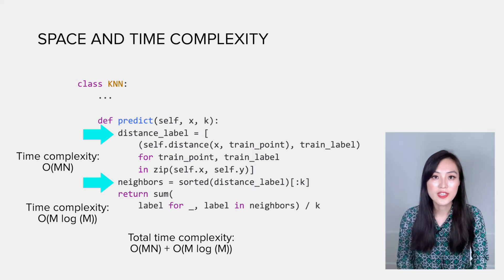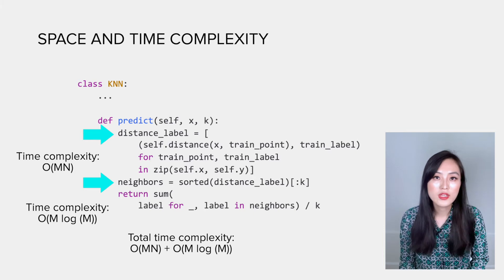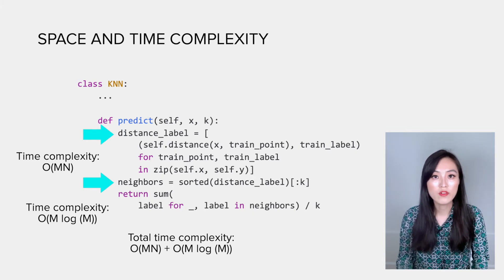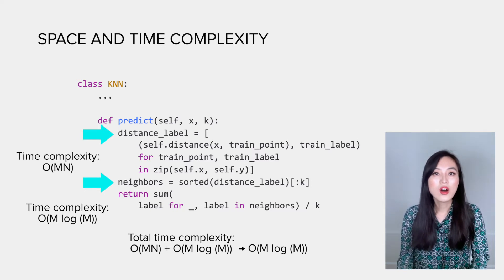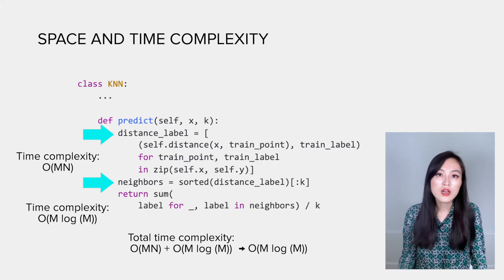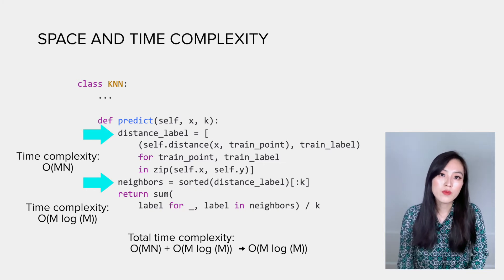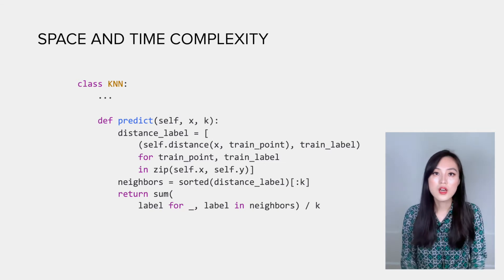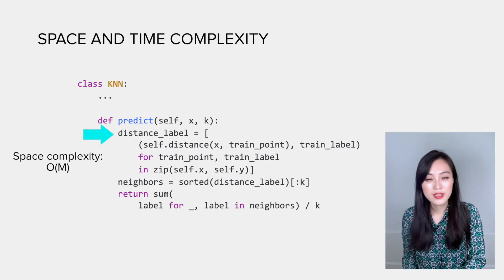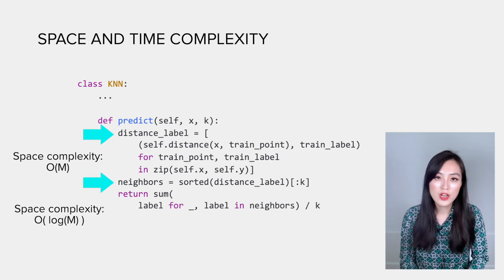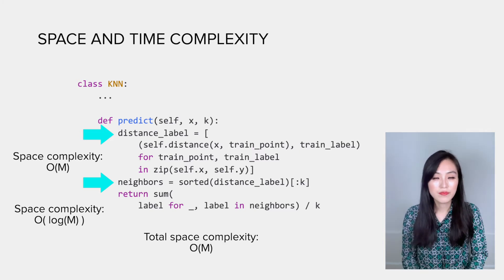Assuming log M is larger than N, because typically the number of training data points is much more than the number of features, so the overall complexity can be reduced to O(M log M). When we need to make a lot of predictions using huge amounts of training data points, looking for nearest neighbors can become a bottleneck. For space complexity, we need O(M) to store the distance-label pairs. Python's built-in sorted function uses O(log M) space, so the overall space complexity is O(M).